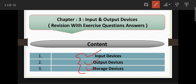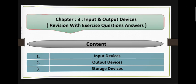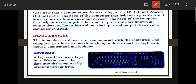We know that the computer works according to the IPO cycle. The parts of the computer that help us to give data and instructions are known as input devices. The parts of the computer that help us to see or print the result of processing are known as output devices.